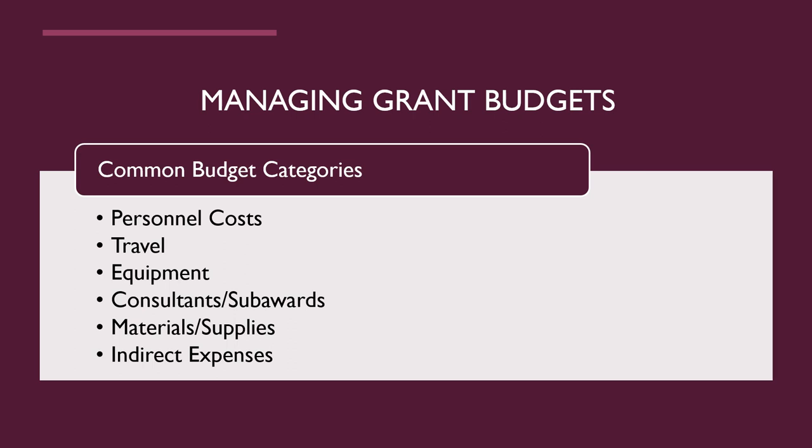The most common budget categories include the following. Personnel costs: these are costs that include salary and wages as well as fringe benefits if these are offered through your organization. Employees are paid through an annual salary amount or hourly wage. Fringe benefits are additional compensation offered to employees that often includes health insurance, life insurance, and possibly tuition assistance, gym memberships, child care subsidies, employee discounts, and more.